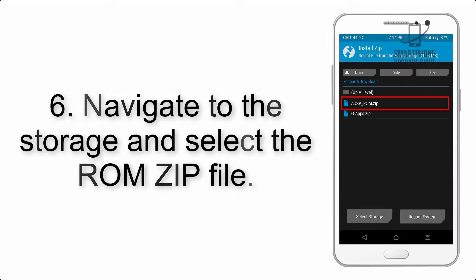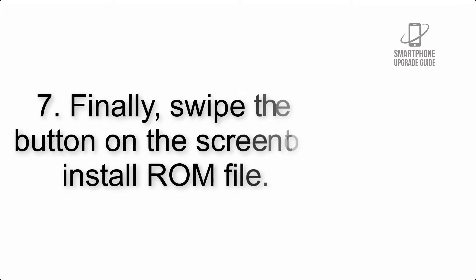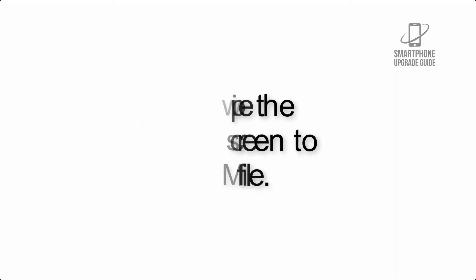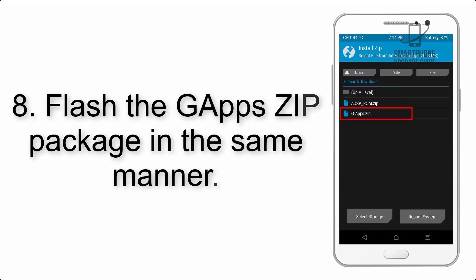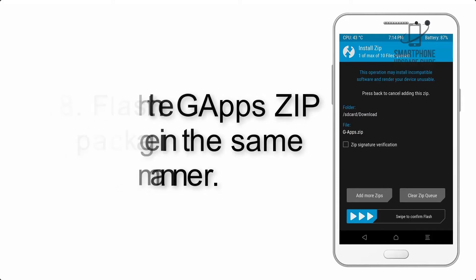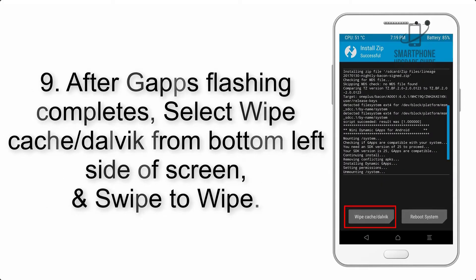Step 5: go back to the recovery main screen and tap on the install button. Step 6: navigate to the storage and select the ROM zip file. Step 7: swipe the button on the screen to install the ROM file. Step 8: flash the G apps zip package in the same manner.